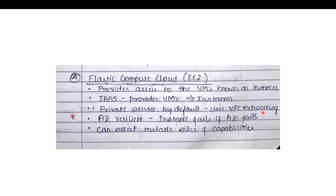I discussed VPC in Day 2, so you can check that previous video. EC2 is AZ resilient, meaning if an availability zone fails, the EC2 instance will stop functioning. This is because when creating an EC2 instance, we place it inside a subnet, and the subnet is AZ resilient. So if the subnet fails, your EC2 instance also stops functioning. This is an important point for the exam.